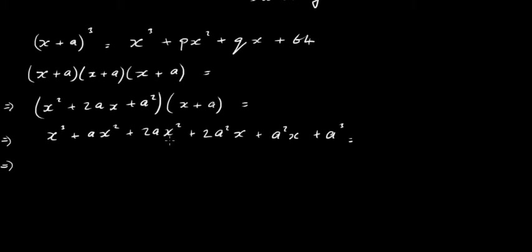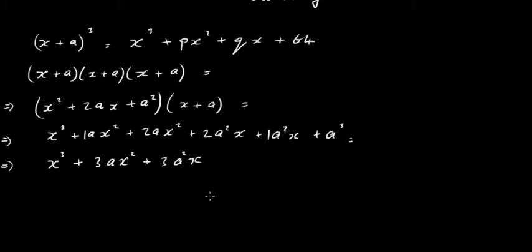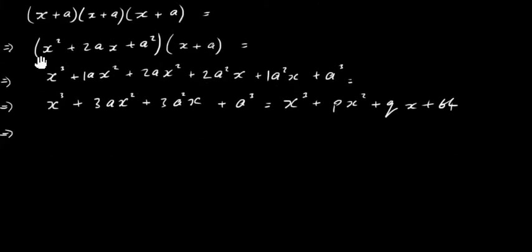Now, we've got an x squared here and an x squared here that we can add, and an x here and an x here. Writing down the x cubed first, we have one ax squared and two ax squareds, giving three ax squareds. We have two a squared x terms and one a squared x term, giving three a squared x's. Finally, we've got a cubed at the end. Writing the right-hand side: x cubed plus px squared plus qx plus 64. The x cubed coefficients are both 1, so 1 equals 1 — that's fine.